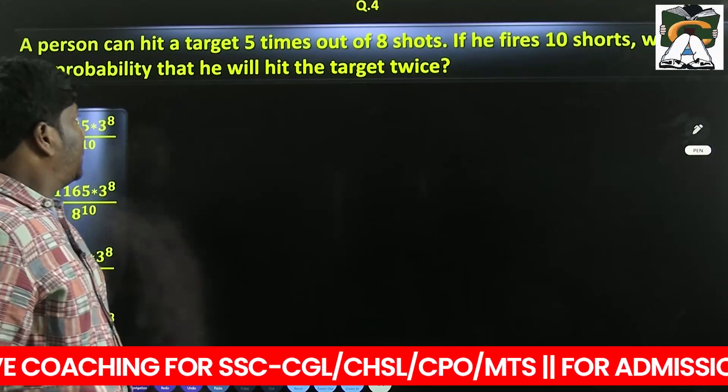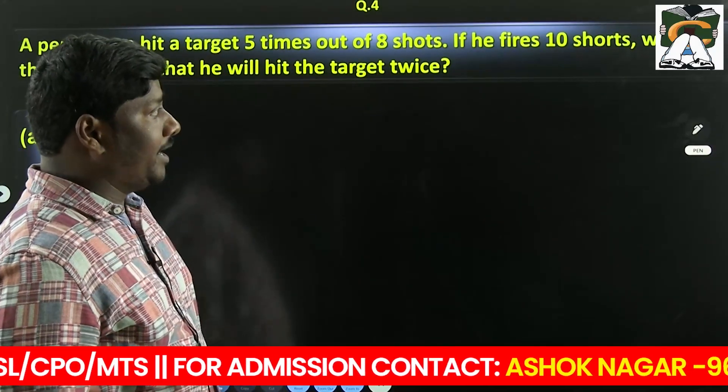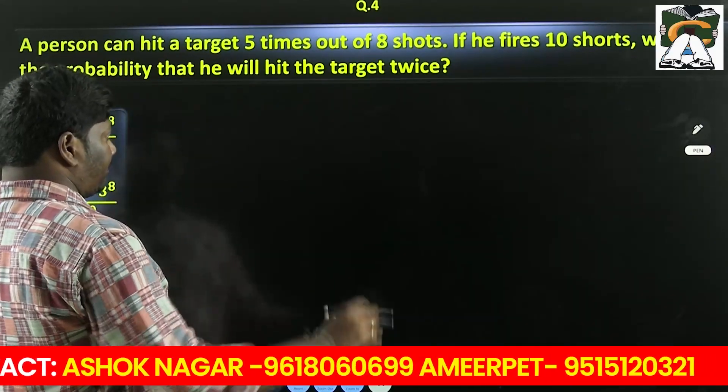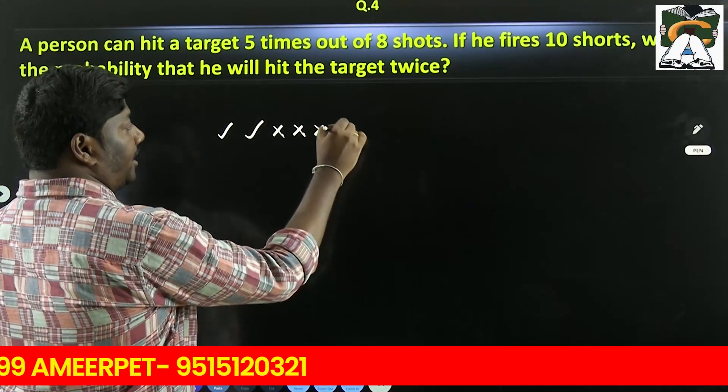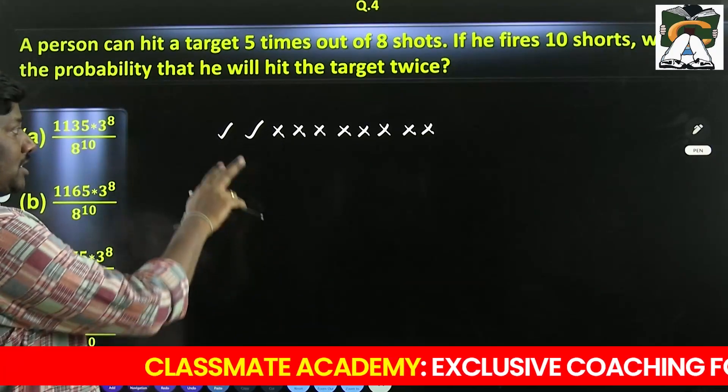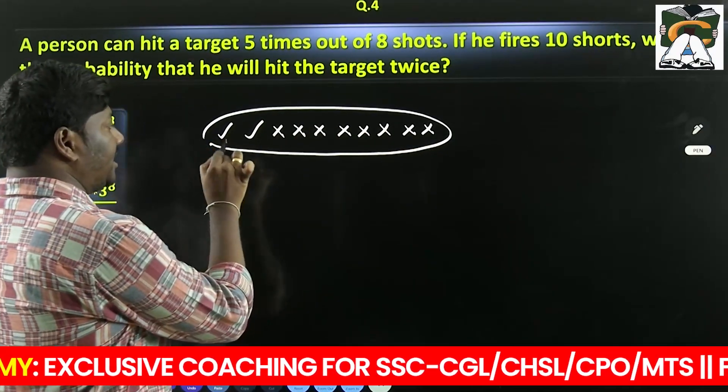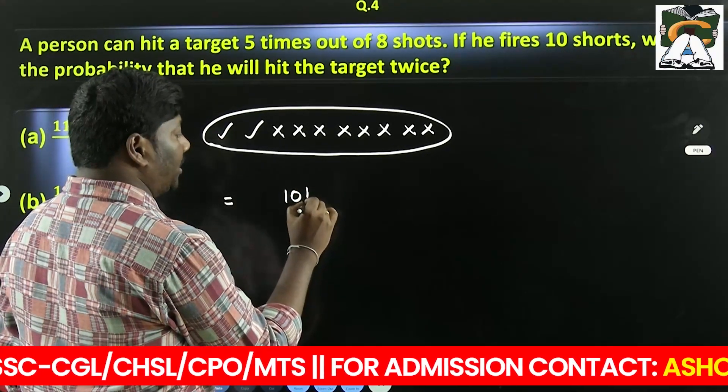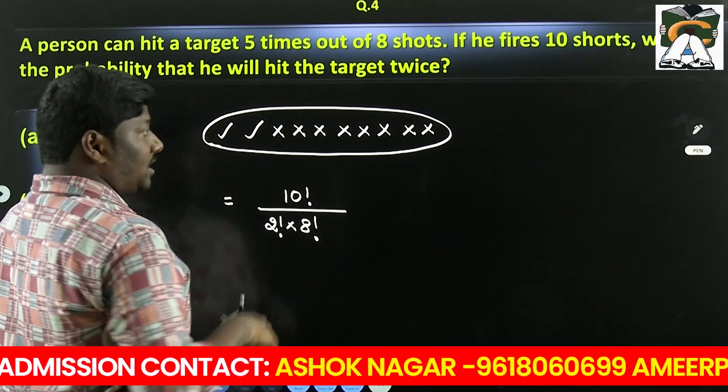Last problem: a person can hit a target 5 times out of 8 shots. If he fires 10 shots, what is the probability that he will hit the target twice. So 2 times hit the target, 8 times not hit the target. So permutations and combinations, we arrange the number of permutations. This is 10 factorial divided by 2 factorial into 8 factorial. It is just a number of cases.